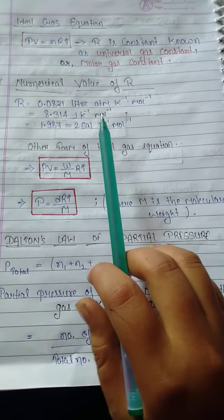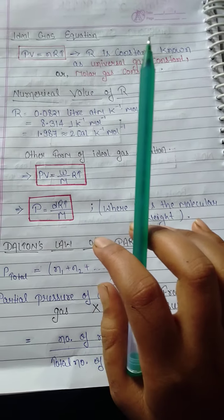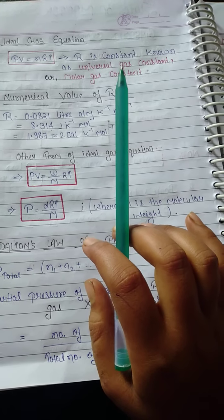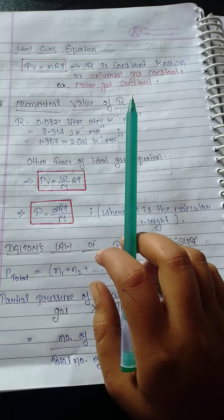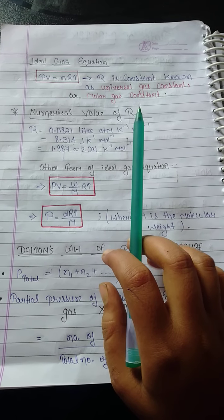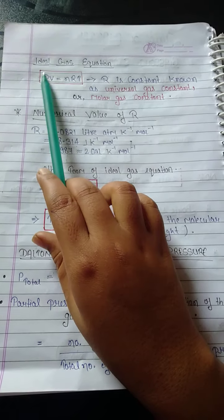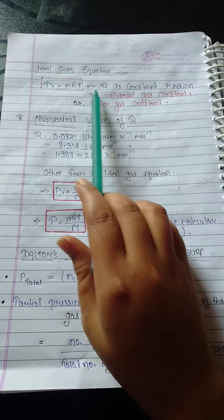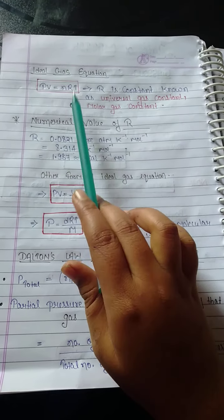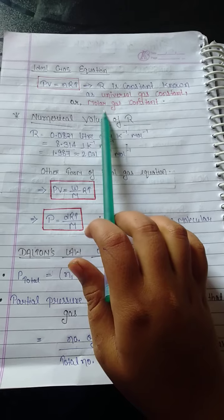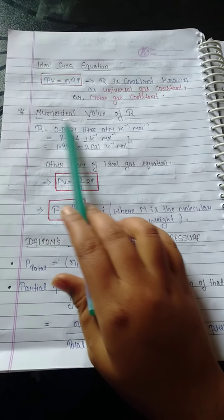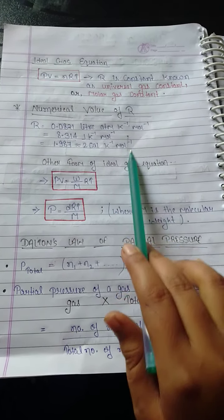On combining Boyle's law, Charles law, and Avogadro's law we get an equation known as the ideal gas equation. Here equation is PV is equal to nRT. R is constant known as universal gas constant or molar gas constant. This is all numerical value of R. Please remember this, it is very very important.